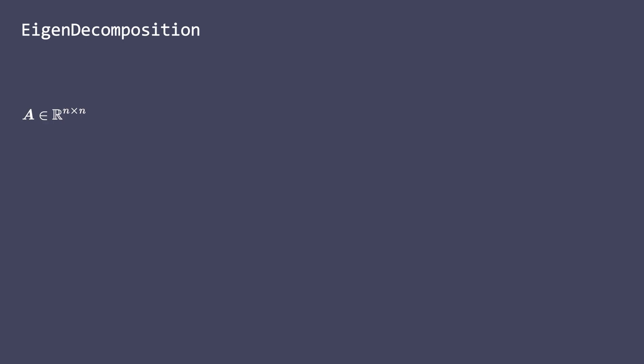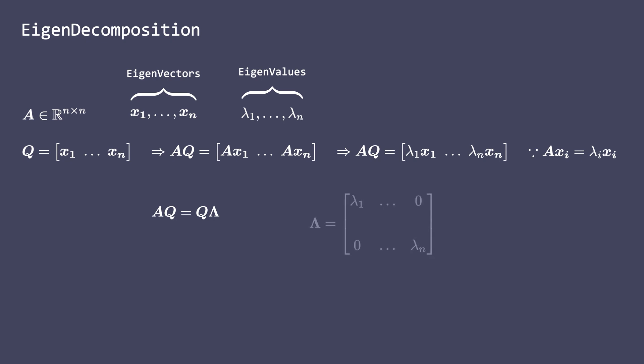Suppose a matrix A is a square matrix with n linearly independent eigenvectors x1 through xn and corresponding eigenvalues lambda 1 through lambda n. Let's define a new matrix Q to be a collection of these eigenvectors, such that each column of Q is an eigenvector of A. Now AQ can be written as, which can be rewritten as, since Ax equals lambda x. This means AQ equals Q lambda, where lambda denotes the diagonal matrix of eigenvalues.